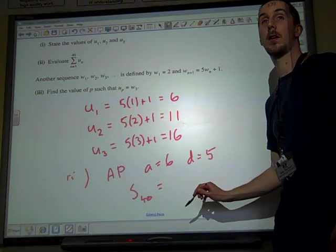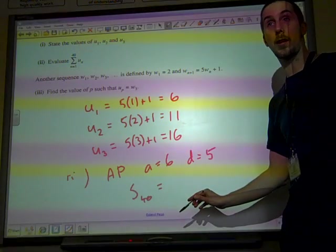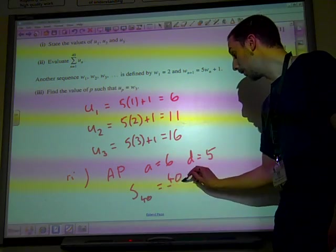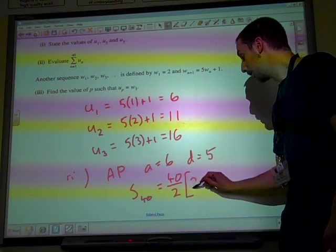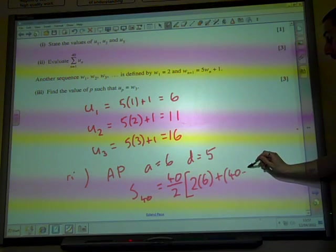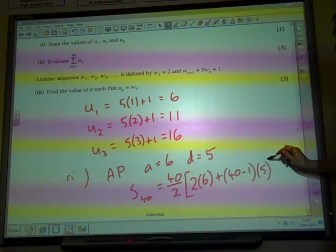So the sum of the first 40 terms from the formula sheet, the second of the two formulas that we wrote down, is N over 2, 2A, plus N minus 1, D, times D.